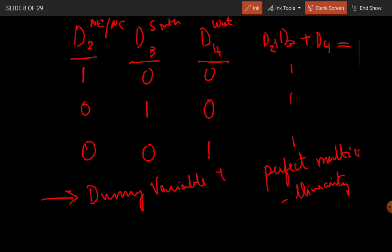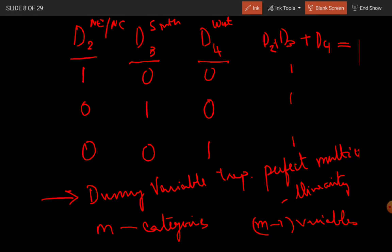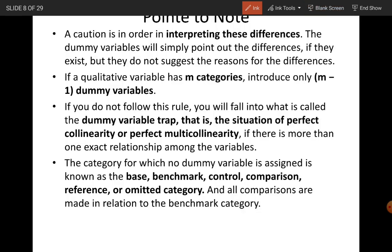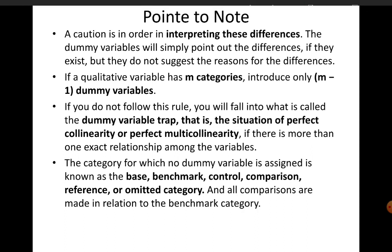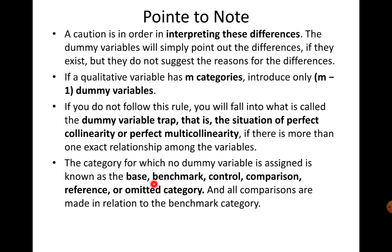We want to avoid this trap. That is why if you have m categories for a qualitative variable, you introduce m minus 1 dummy variables. Whichever category does not receive a dummy is called the base category — also known as the benchmark, control, comparison, reference, or omitted category. In this example, the western region was not assigned a dummy, so it is the base category.